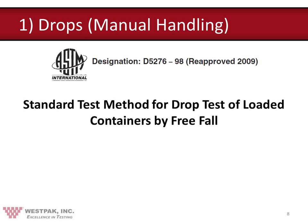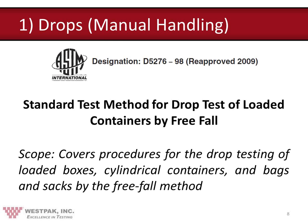Let's start with the first test input: drops, or manual handling. Drops are caused by humans during normal distribution where boxes are being handled. The ASTM standard is ASTM D5276, with the latest provision from 1998, reapproved in 2009. This standard tells us how to run the test for consistency from test to test. It doesn't tell us about drop heights or number of orientations — it simply ensures you have good consistency from one test to the next so you can identify the cause of issues.